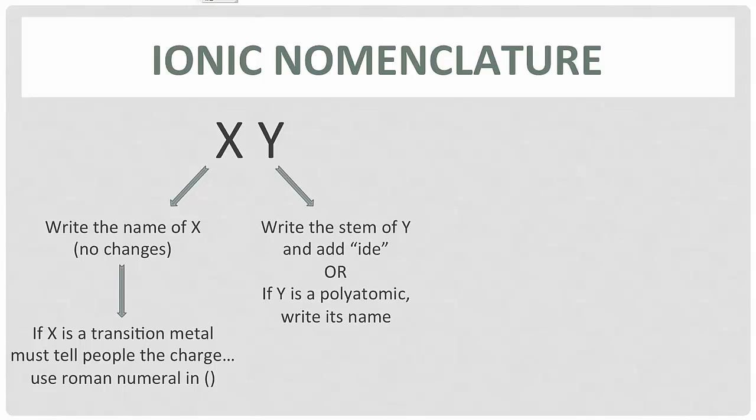After we've written down the name of our metal or polyatomic, we then write the stem of the nonmetal's name and add 'ide'. So if we've got oxygen it becomes oxide, if we got fluorine it becomes fluoride, if we have sulfur it becomes sulfide. So I hope you see the trend here—if I have iodine it becomes iodide. But if it's a polyatomic, we simply write its name, and that's because the polyatomics we already know what their charge is and we just put it down there.